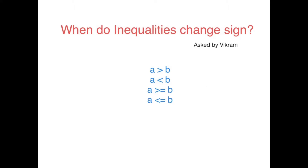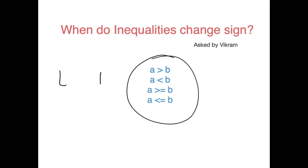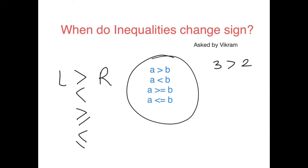As you know, there are four different kinds of inequalities and every inequality has a left side and a right side. In between them we can write either a greater than sign, less than sign, greater than or equal to sign, and less than or equal to sign. Let me take an example: three is more than two.